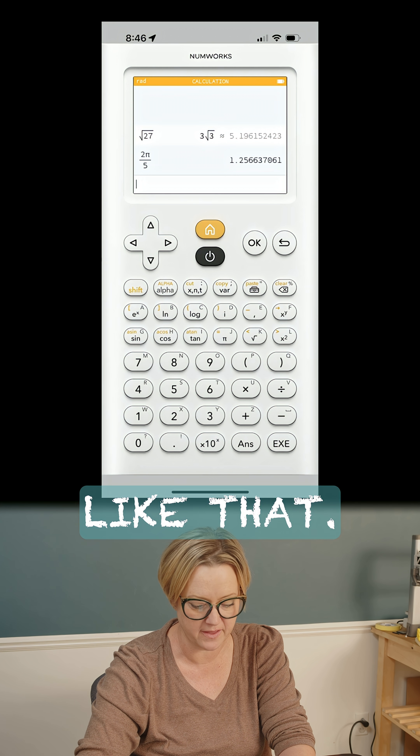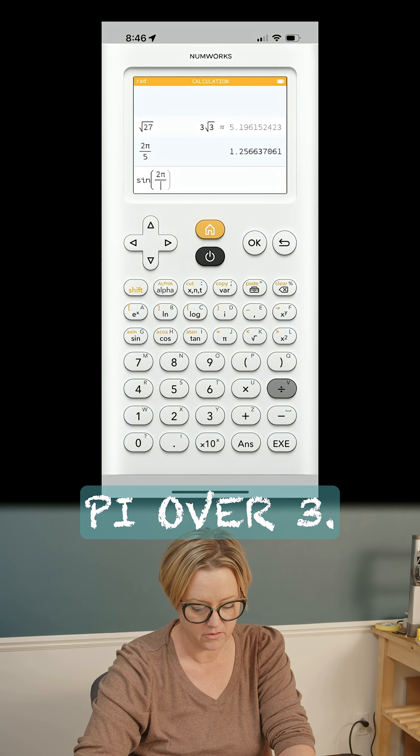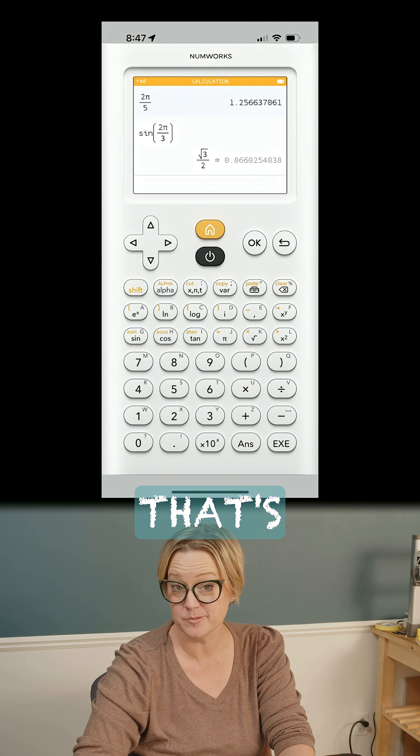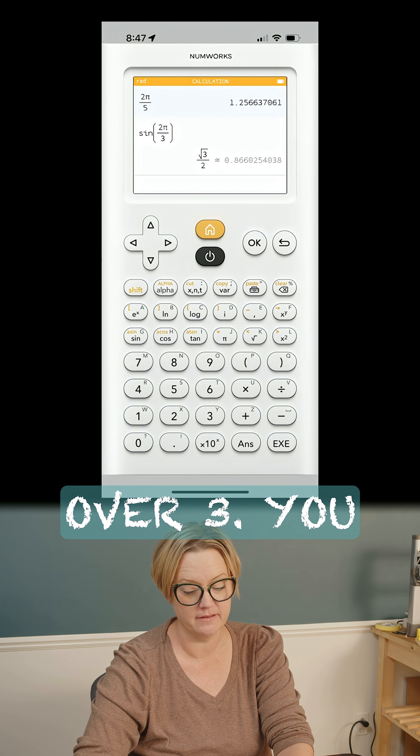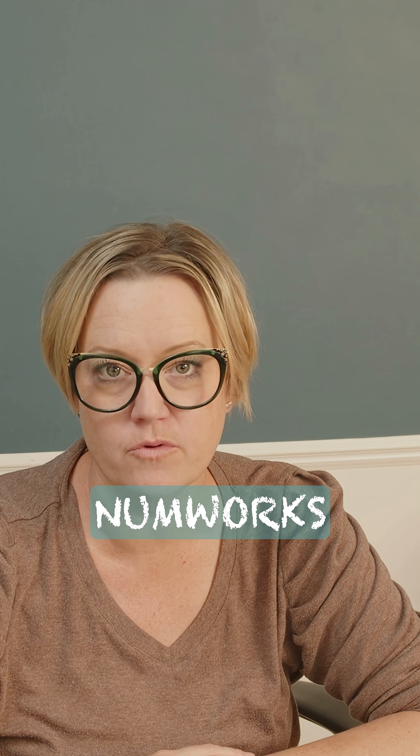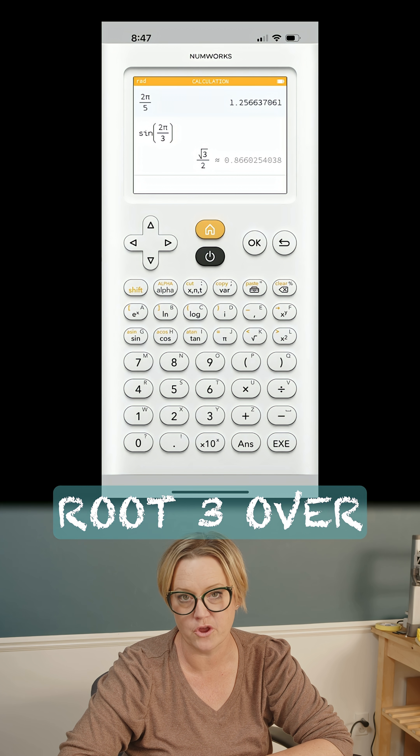So I wonder if sine 2π over 3. That's pretty nice. So this just gave me, sine 2π over 3. You don't need the unit circle, you just need a Numworks calculator. So sine 2π over 3, it just told me that it's √3 over 2.